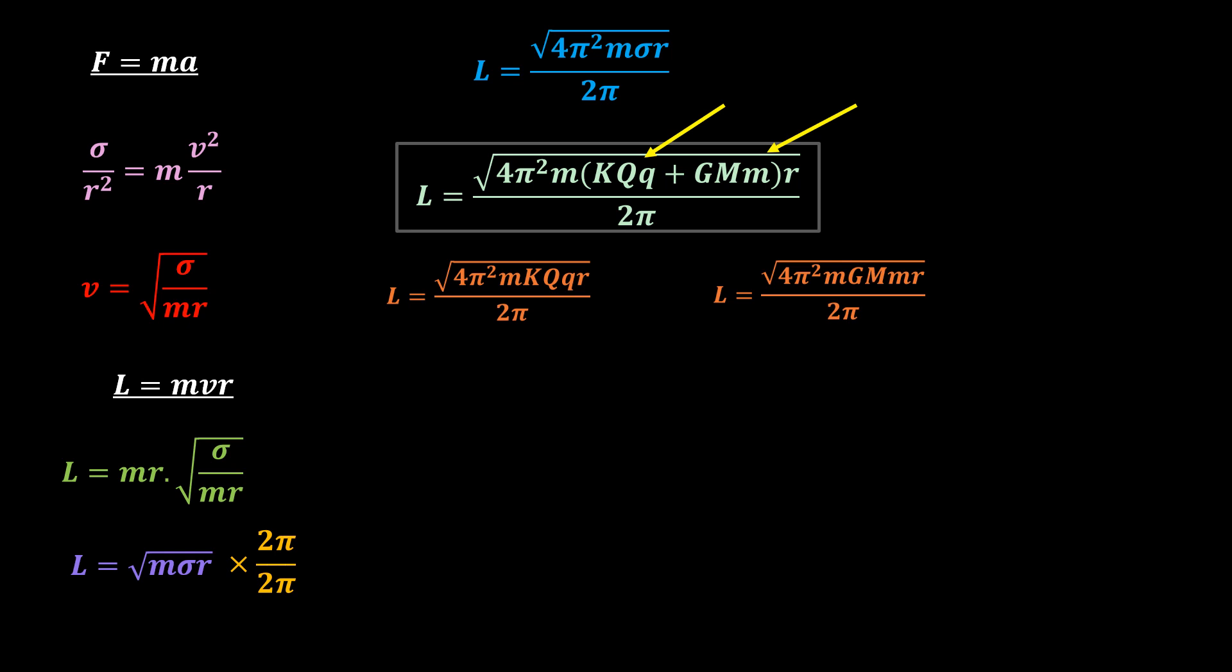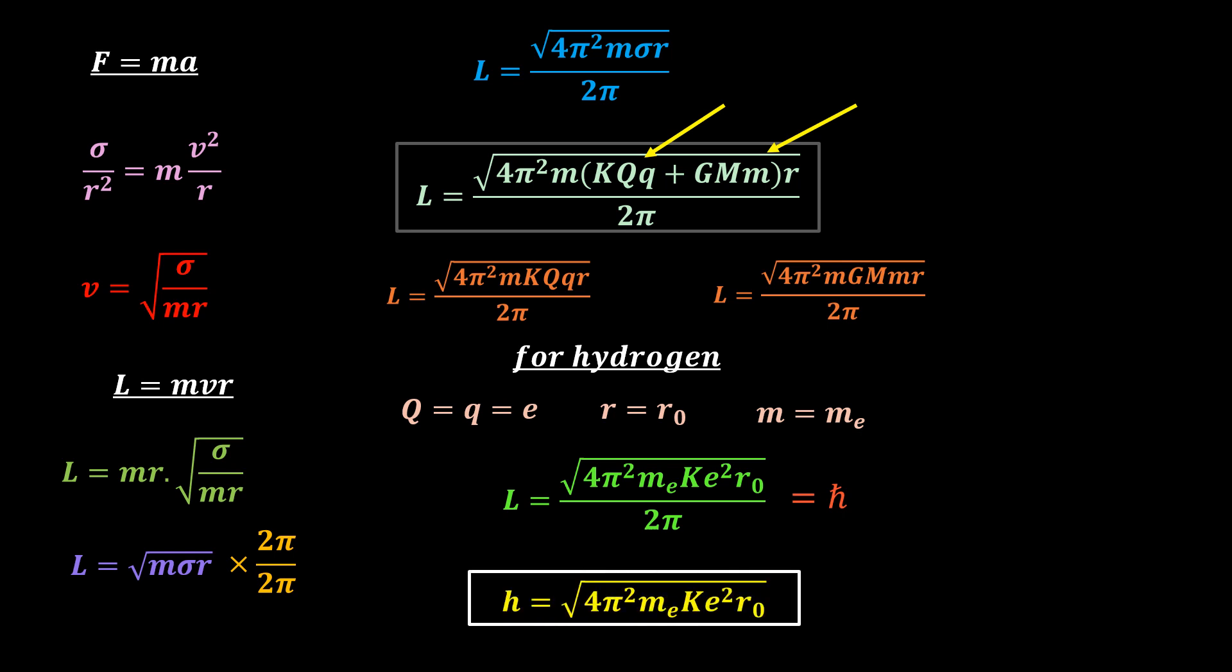Take the case where mass is negligible. A natural example is the hydrogen atom. Therefore, capital Q equal to little q which is equal to the electronic charge e. R will be the Bohr radius and m the mass of the electron. Put those values into the equation and you will be amazed at the result. You get L equal to the value of the reduced Planck's constant h bar. Which means the Planck's constant h is equal to this square root.